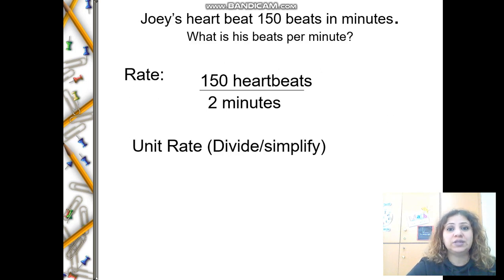Joey's heart beat 150 beats in two minutes. What is the beats per minute? The rate is going to be 150 heartbeats to two minutes. To find the unit rate, divide or multiply. How am I going to get a denominator of one?